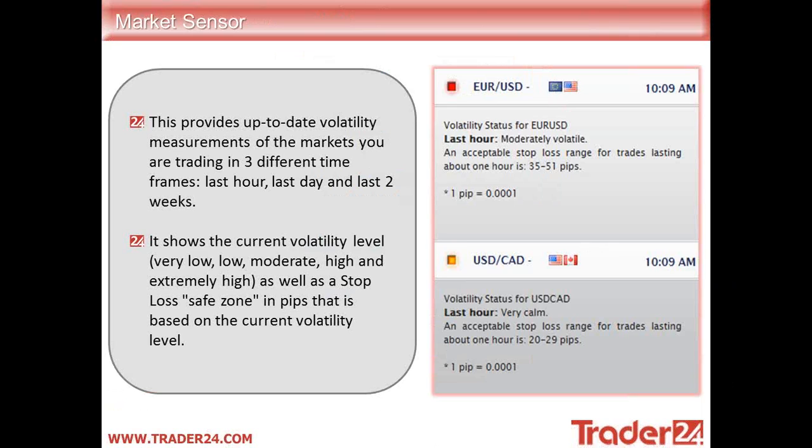So if we have a look at the Eurodollar as an example, it was moderately volatile with a given stop loss range of about 35 to 51 pips over the last hour.